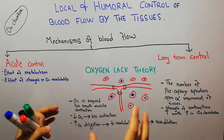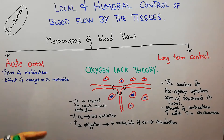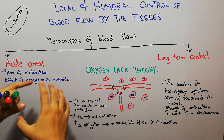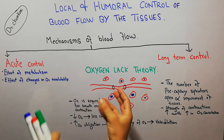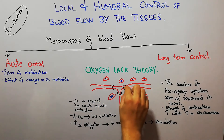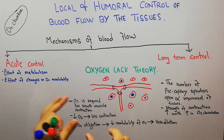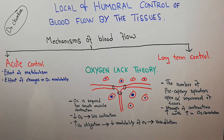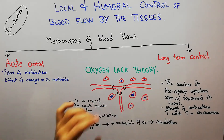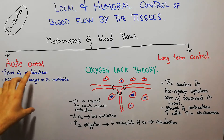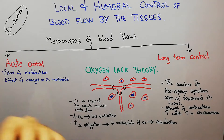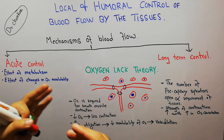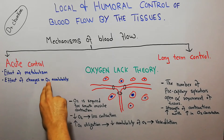We previously discussed the vasodilation theory: due to changes in metabolism and oxygen availability, vasodilatory substances are released in the tissue which dilate the blood vessels, increasing blood flow. Similarly, the oxygen lack theory also explains the effect of metabolism and oxygen availability on the acute control of blood flow to any tissue.